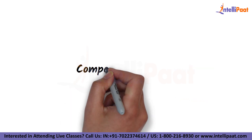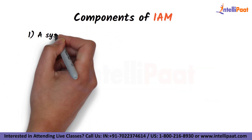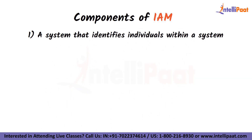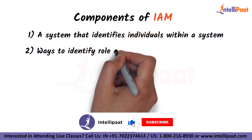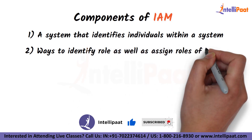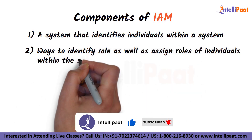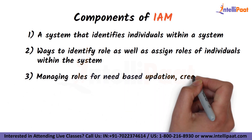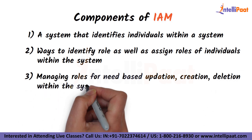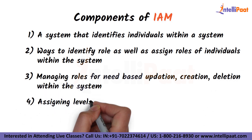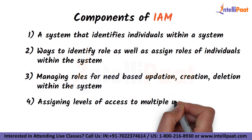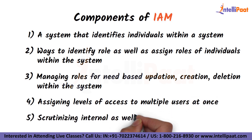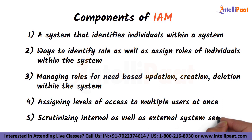Let us now understand the components of IAM. Number one: a system that identifies individuals within a system. Number two: ways to identify and assign roles of individuals within the system. Number three: managing roles for need-based updation, creation, and deletion within the system. Number four: assigning levels of access to multiple users at once. And number five: scrutinizing internal as well as external system security.